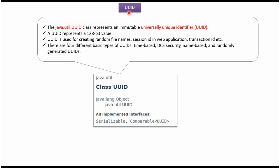In this video tutorial I will explain the UUID class. UUID class belongs to the java.util package. The superclass of UUID class is Object class, and UUID class implements the Serializable interface and Comparable interface.